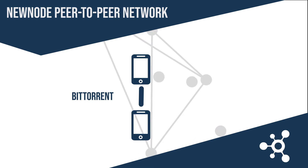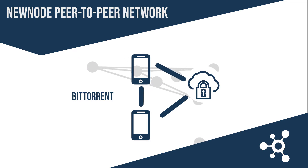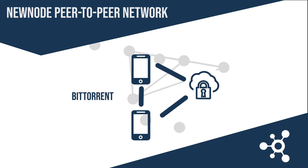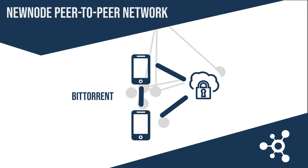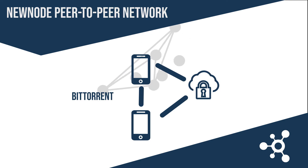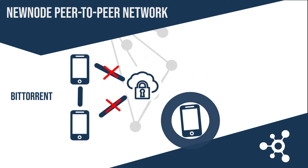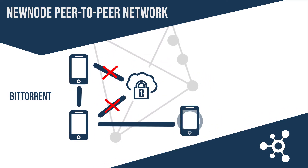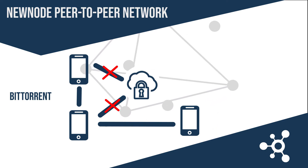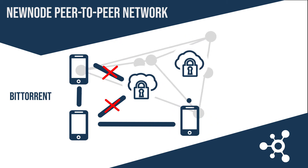Moreover, NewNode uses reliable cloud injectors to encrypt and send data from web sources and introduce data into the peer-to-peer network. If a NewNode-enabled device is able to connect to a cloud injector securely and quickly, that device will receive encrypted web content immediately from the initial web source. If the NewNode-enabled device cannot connect to the cloud injector, the device tries to connect to any other NewNode device, which serves as a proxy server for the injector. In this case, if the node serving as the proxy server does not have the requested data yet, the intermediate node will try to load the data from another cloud injector and transmit it immediately to the requesting node.